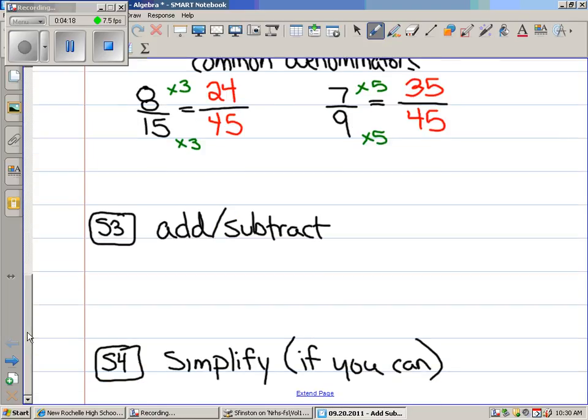And now that we have equivalent fractions, this is a very happy thing because we can just add or subtract them. That's really the hard part about fractions, finding equivalent fractions. So 24 over 45 plus 35 over 45. How much we got? 59 over 45.